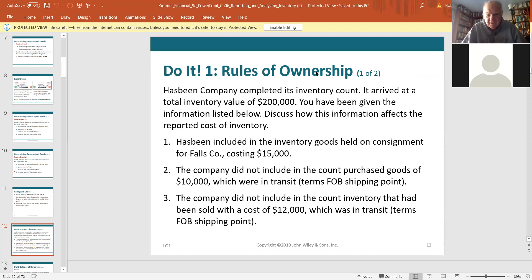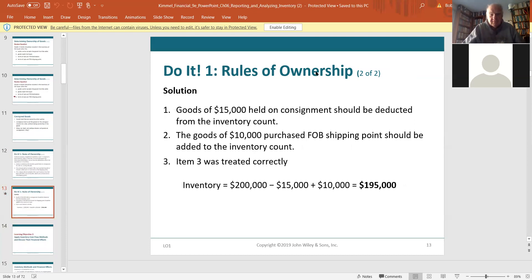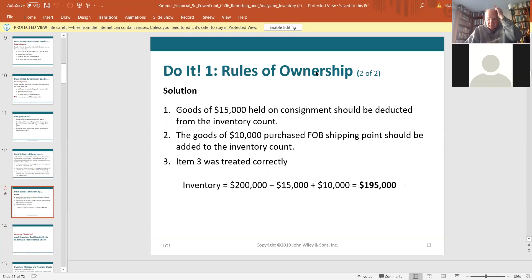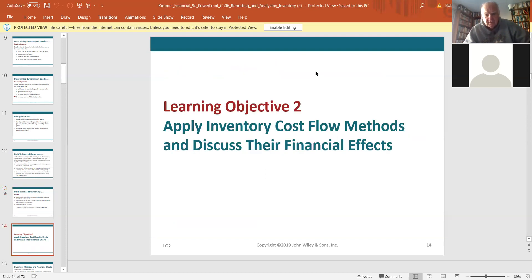And then the third one, the company did not include inventory that had been sold where the terms are FOB shipping point. And that was correct. And here we go. They're showing us the difference. So our original inventory was $200,000, what they counted. Now they have to subtract out $15,000, and they have to add in the $10,000, and the third item was done correctly. And where I worked for many years, we had consigned inventory all over the country. We had inventory at different locations, different factories and warehouses. It was a pretty daunting thing to take that inventory once a year.